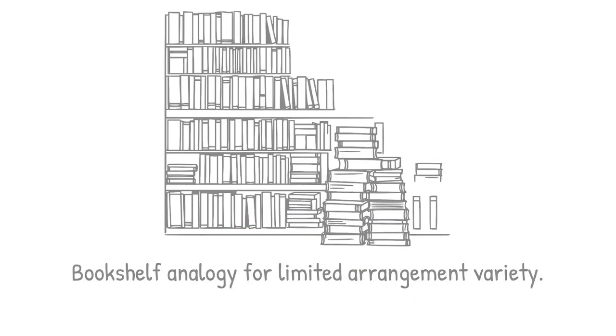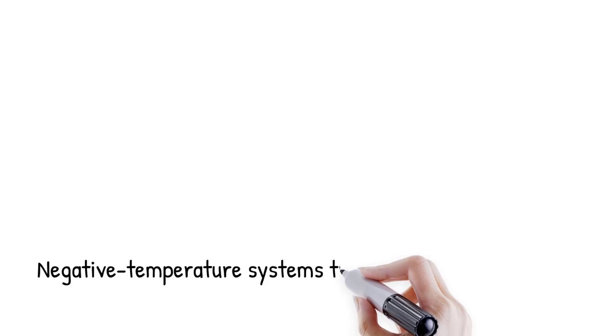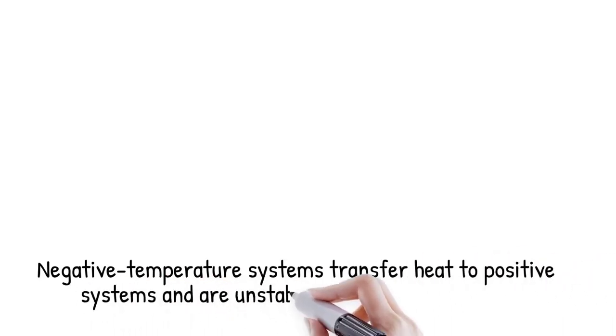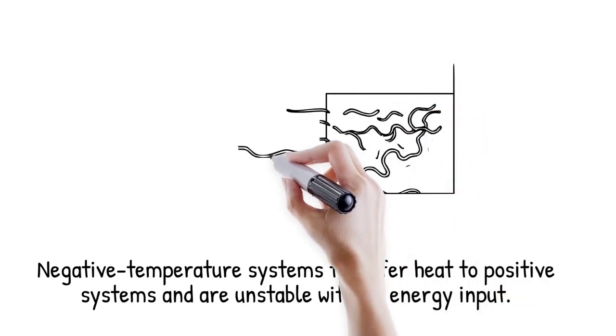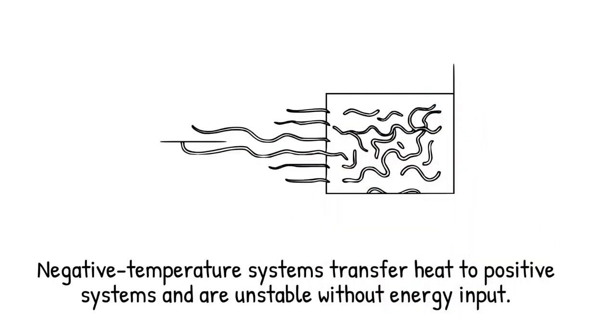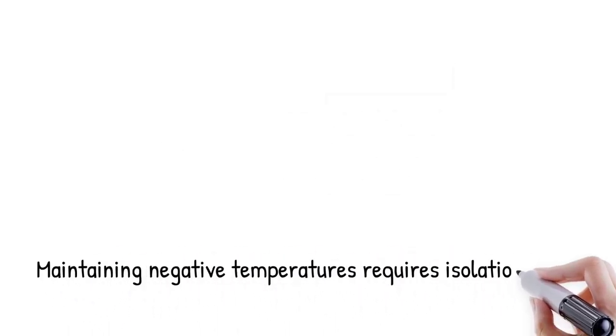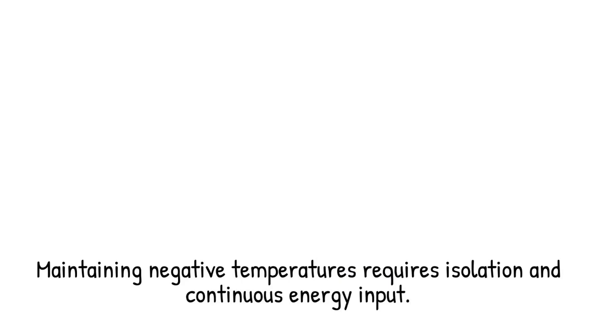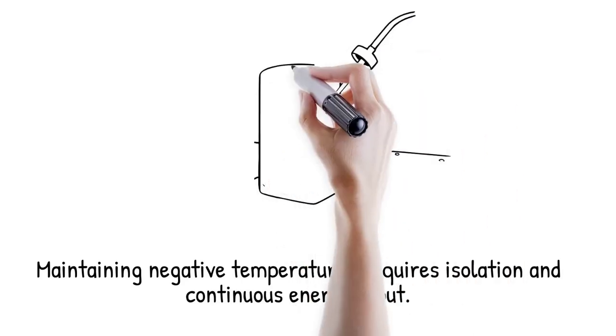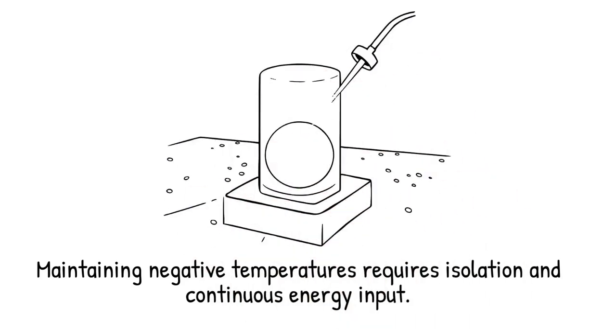A negative temperature system will always transfer heat to any system at positive temperature because it represents an even higher thermodynamic hotspot. However, such inverted states are inherently unstable. Without continuous energy input, they rapidly decay back to the normal, positive temperature configuration. Ensuring a sustained negative temperature condition thus requires carefully isolating the system and persistently pumping energy faster than it can leak away. This metastability distinguishes negative temperature phenomena from everyday thermal behavior.